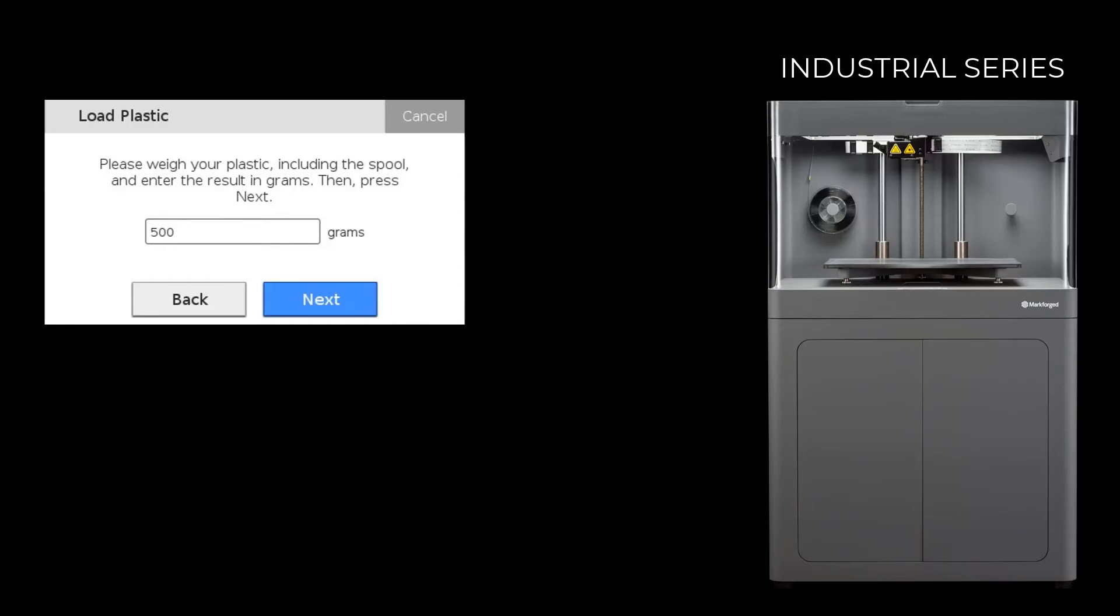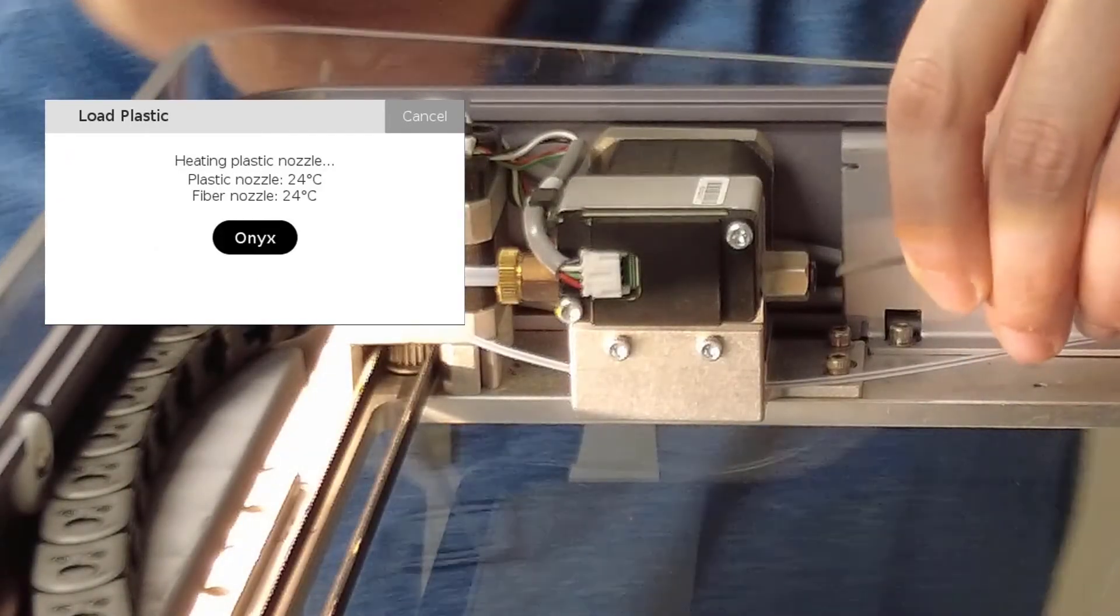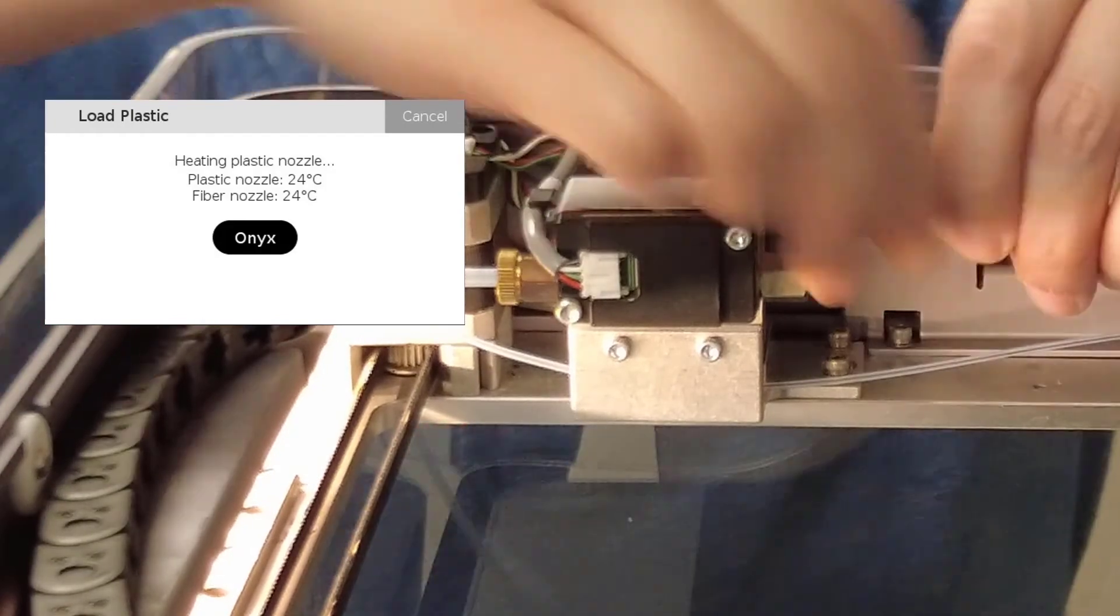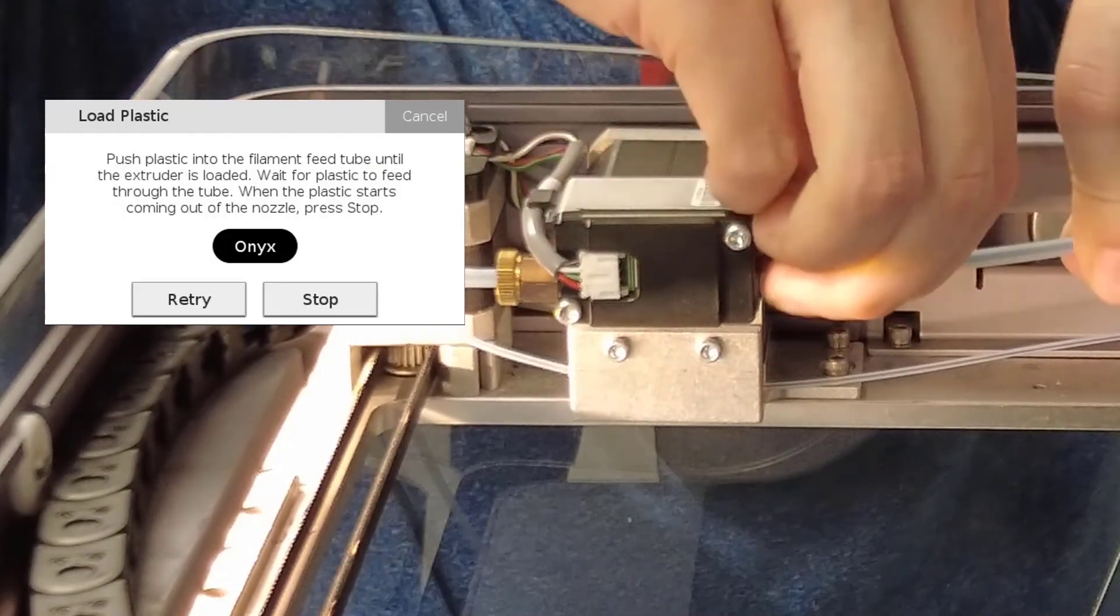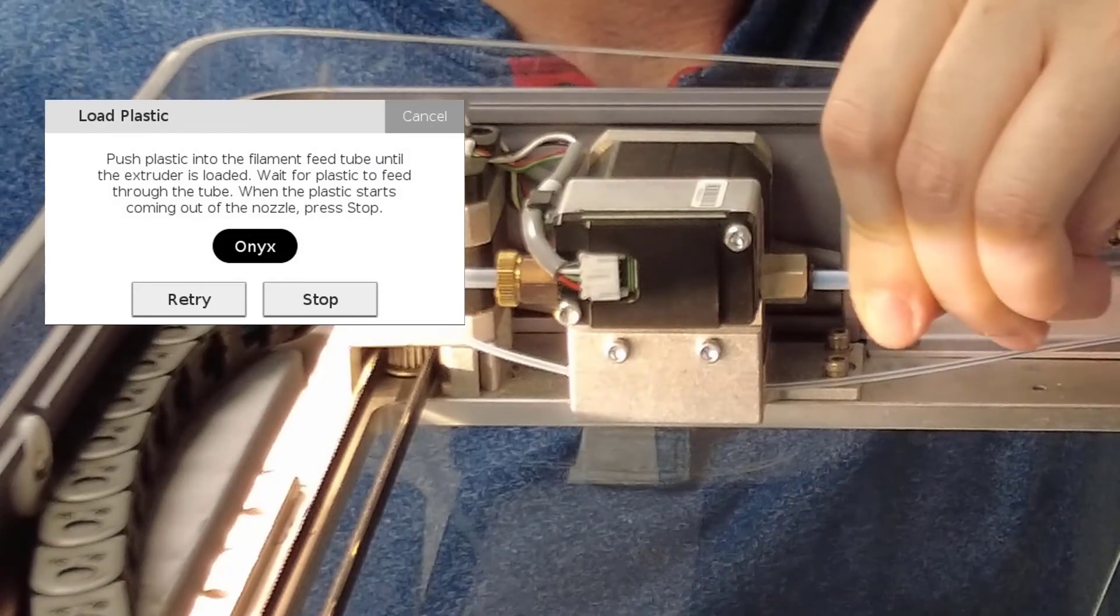Wait for the print head to heat up and press the next button on the screen. Feed the material from the plastic feed tube into the plastic extruder and insert the feed tube into the extruder's push to connect fitting.